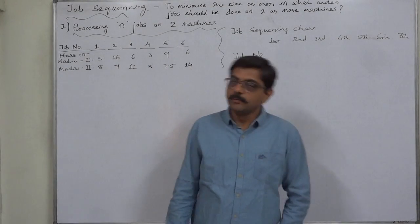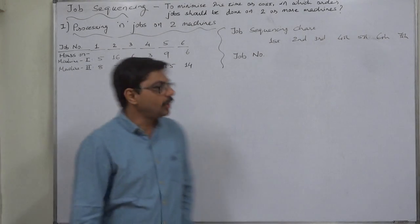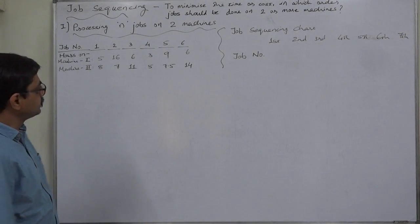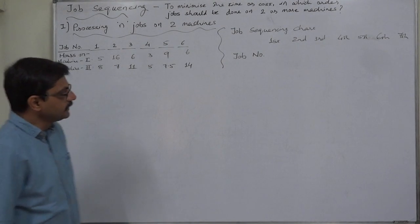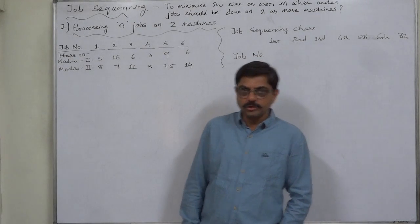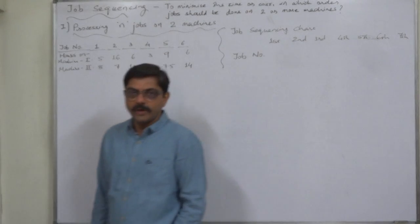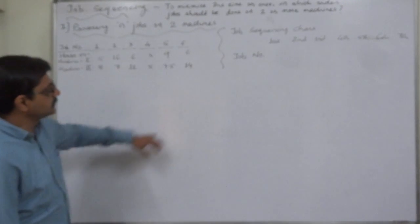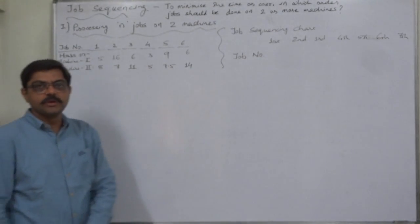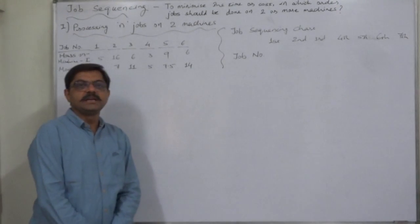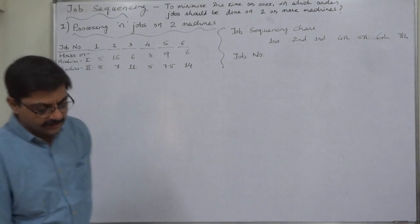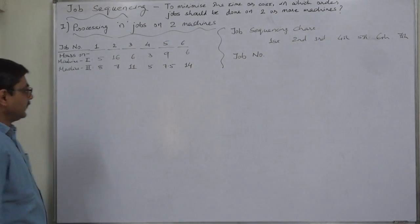Hello and welcome. One more case of processing and jobs on two machines in the chapter job sequencing. This time we are going to discuss the solution in two parts. In the first part we are going to discuss the job sequencing, and in the second part we are going to prepare the statement showing minimum total time elapsed and idle time.